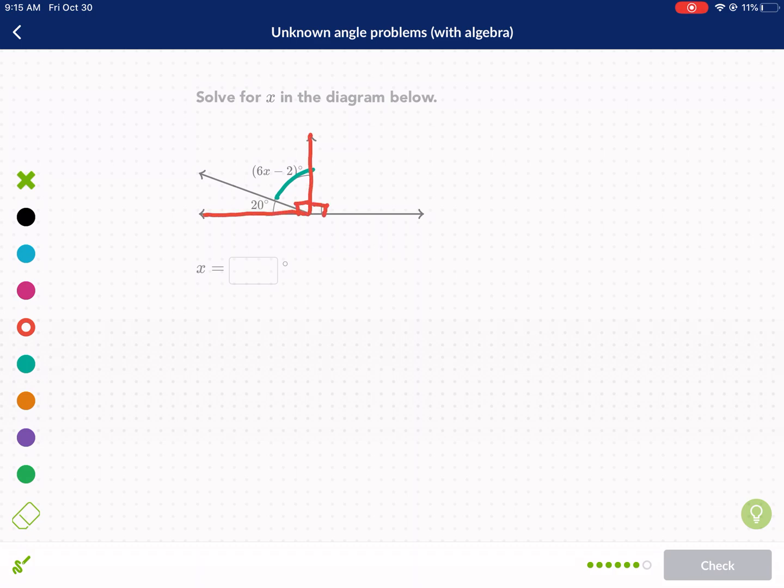But notice that the two angles form only 90 degrees. So 90 on both sides. And this one is blue. So then we have 20 plus 6X minus 2 equals 90. Not 180 because the angles in question are here and here. And since this is 90, this one also needs to be 90 because they're supplementary. And that is equal to 90.